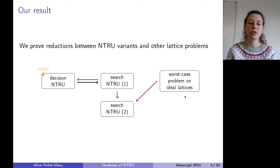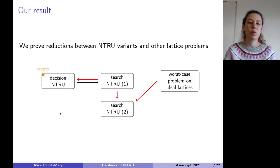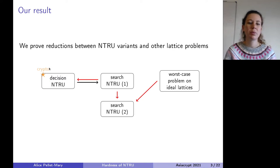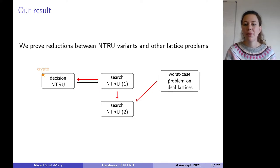Ideal lattices are just lattices with some extra structure. The picture is not completely complete yet, because what we really want for crypto is a hardness guarantee on the decisional NTRU problem — the one used to construct cryptographic primitives. We would like a guarantee based on worst-case problems on ideal lattices, but for now we don't have a reduction from worst-case lattice problems to decisional NTRU. This is already a beginning.